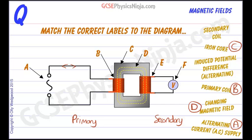Now the secondary coil is here, that's E. And the changing magnetic field is cutting through the secondary coil as it grows and collapses.